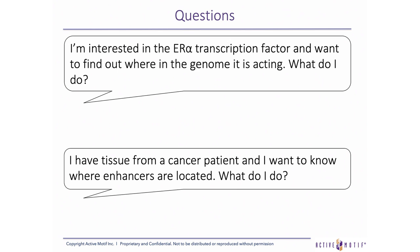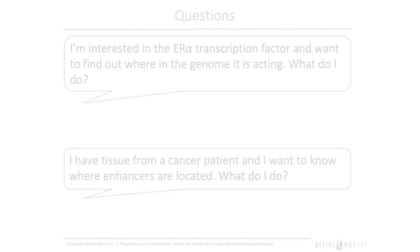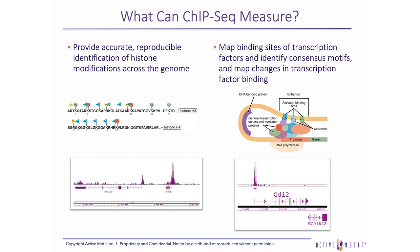For example, I'm interested in the estrogen receptor alpha transcription factor and want to find out where in the genome it is acting — what do I do? Or perhaps, I have tissue from a cancer patient and I want to know where enhancers are located — what do I do? These are both great examples of the type of question ChIP-seq experiments are suited to answer. ChIP-seq can provide accurate, reproducible identification of histone modifications across the genome, and can also map binding sites of transcription factors, identify consensus motifs, and map changes in transcription factor binding.